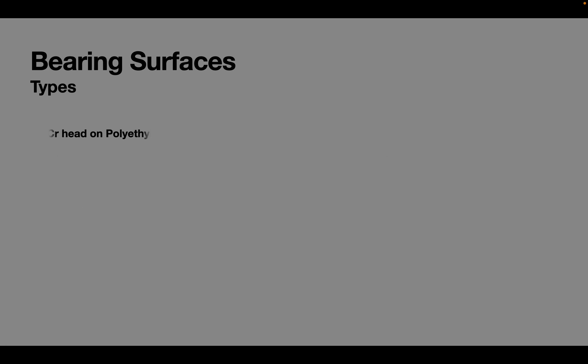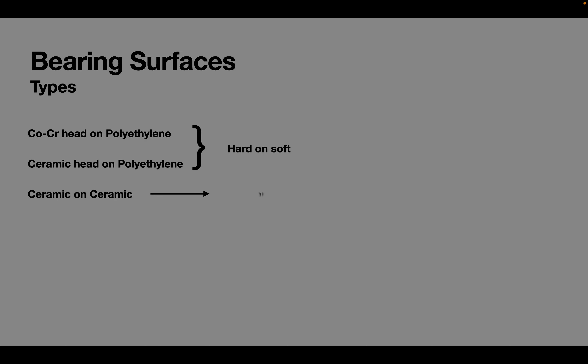Commonly used bearing surfaces in India are metal on polyethylene, ceramic on polyethylene, and ceramic on ceramic. Since polyethylene is much softer than either the metal or ceramic, these two articulations are also called hard on soft. Ceramic on ceramic is also called hard on hard. Since the withdrawal of ASR hip resurfacing during 2009-10, metal on metal hips are rarely performed in India.